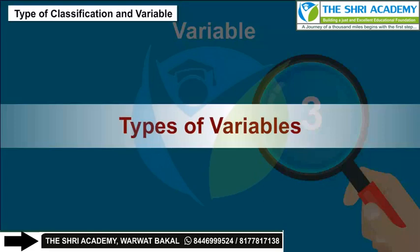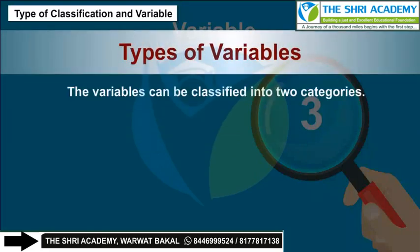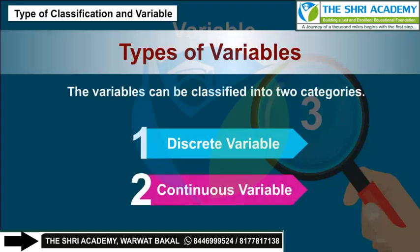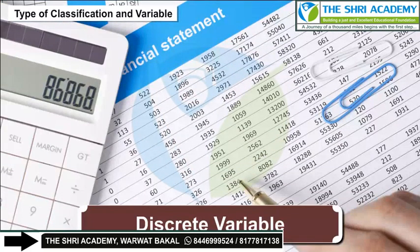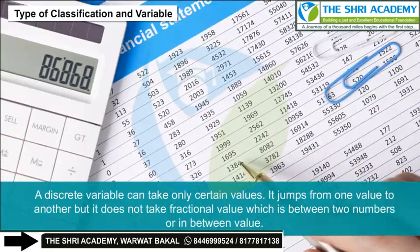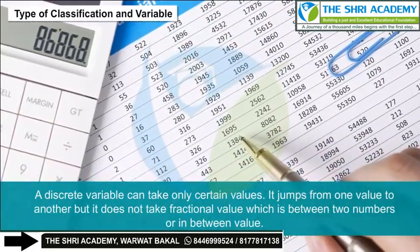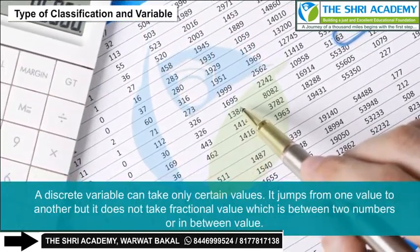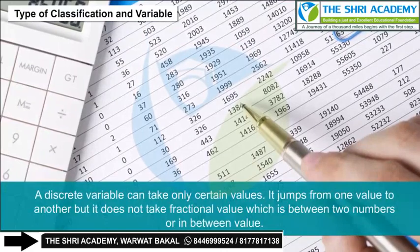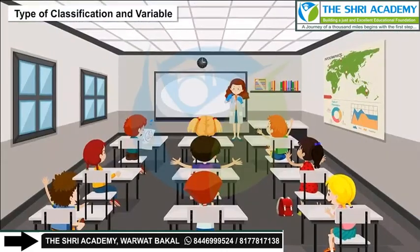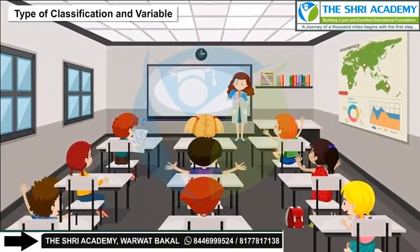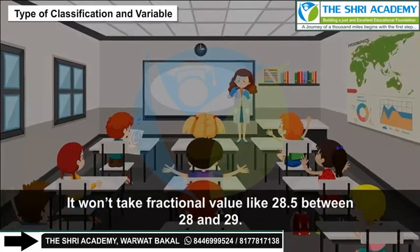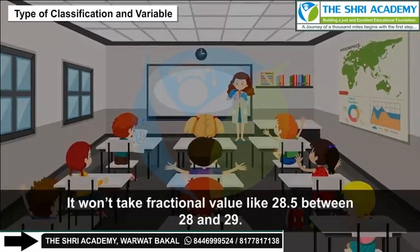Types of variables: variables can be classified into two categories — discrete and continuous. A discrete variable can take only certain values; it jumps from one value to another but does not take fractional values between two numbers. For example, the number of students in a class will assume whole number values only.